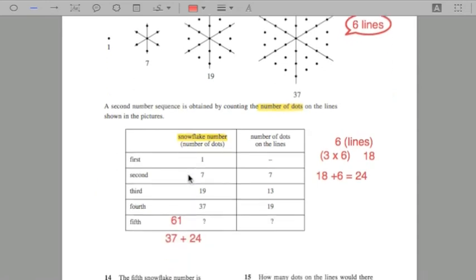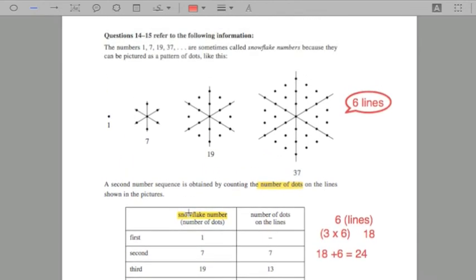So we don't need to, I guess one of the pitfalls with this is sometimes people think, okay, well, there must be a pattern between one and seven, one and seven and 19 and 37,